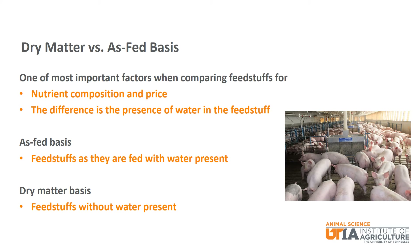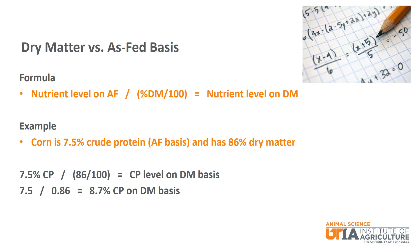Before comparing feedstuffs, it is imperative to understand the difference between dry matter basis and as-fed basis. The difference in each basis is the presence of water. Because water levels can vary among feedstuffs, you cannot compare nutrient levels or even price of the feedstuffs unless water is removed from the equation. This would be like comparing apples and oranges. You must get each feedstuff on a dry matter basis so you are comparing apples to apples. An as-fed basis is feedstuffs as they are fed with water present. A dry matter basis is feedstuffs without water present. Going from an as-fed basis to a dry matter basis is actually pretty simple. You just use this formula: the nutrient level on an as-fed basis divided by percent dry matter divided by 100.